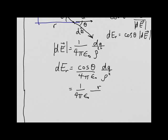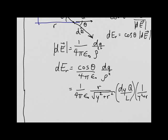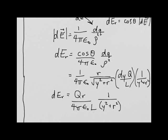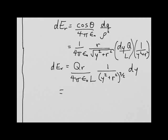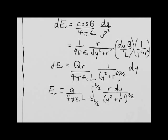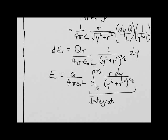Substituting cos theta equals r over the square root of y squared plus r squared, dq equals dy times Q over L, and 1 over rho squared equals 1 over y squared plus r squared, and pulling out constants Q, r, 4 pi epsilon naught, and L, we get the integral of 1 over (y squared plus r squared) to the 3/2 times dy. We integrate from negative L/2 to positive L/2, with r constant, and look up this integral in the appendix.